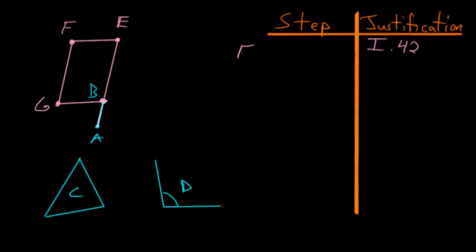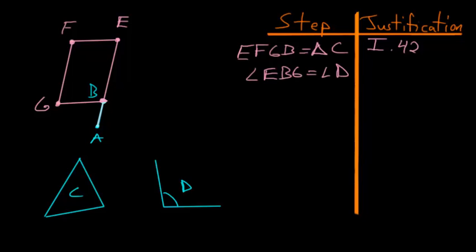So we've just constructed the parallelogram EFGB. It's equal in area to triangle C, and this angle EBG is equal to the given angle D.